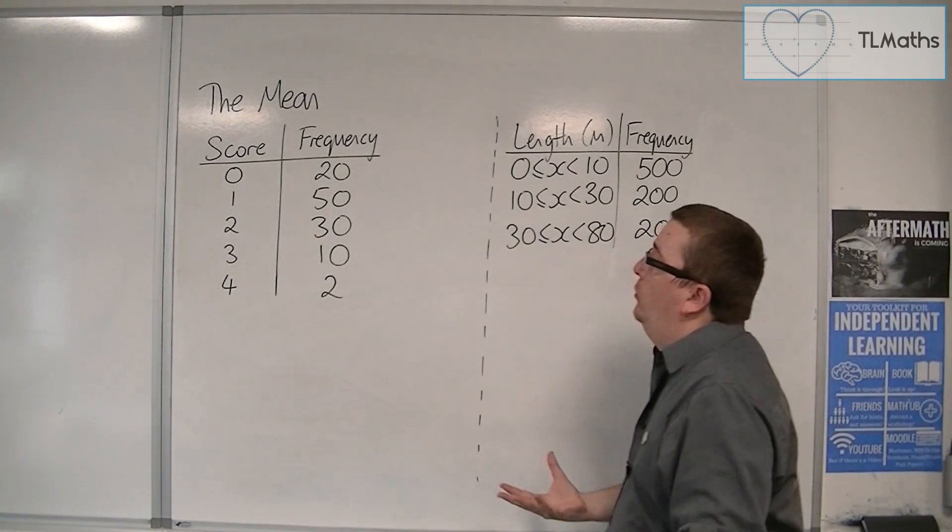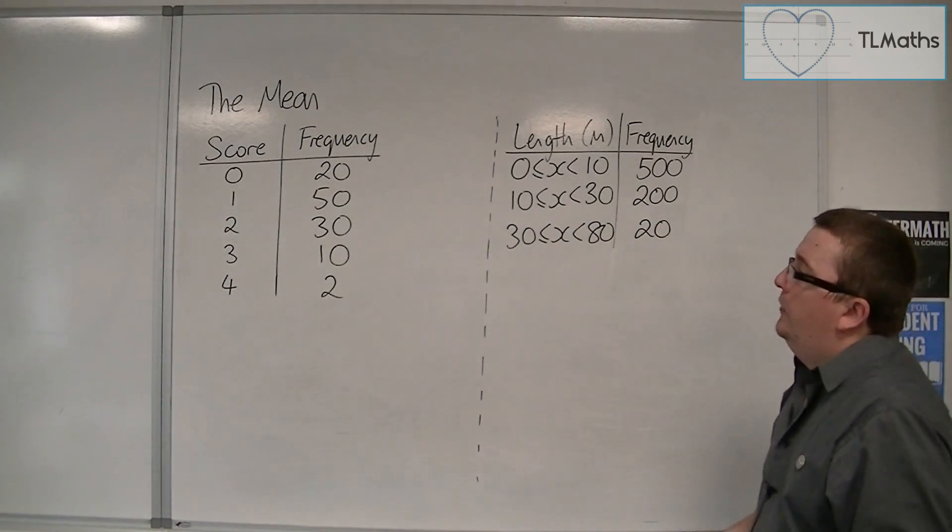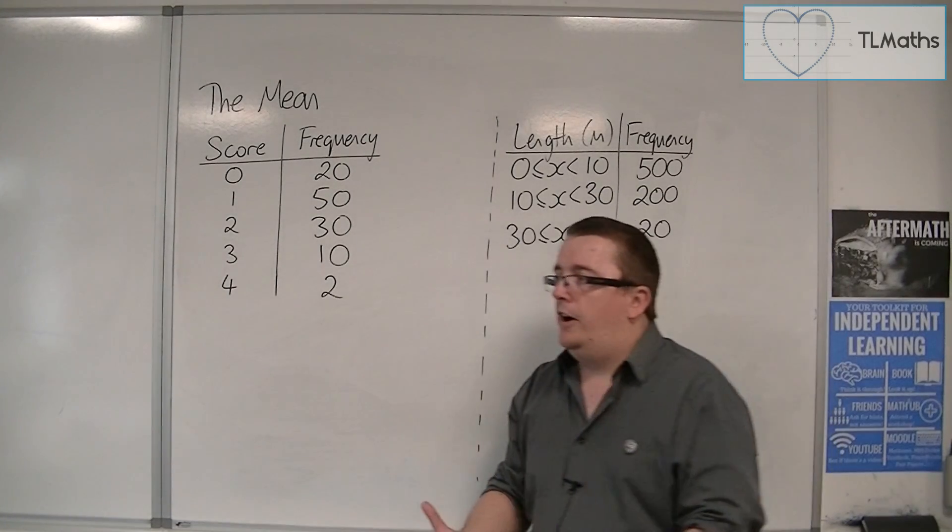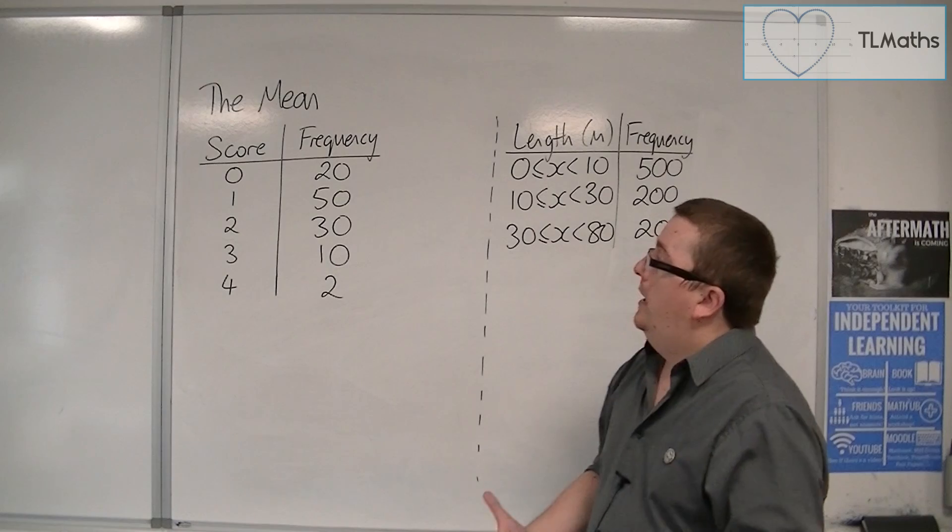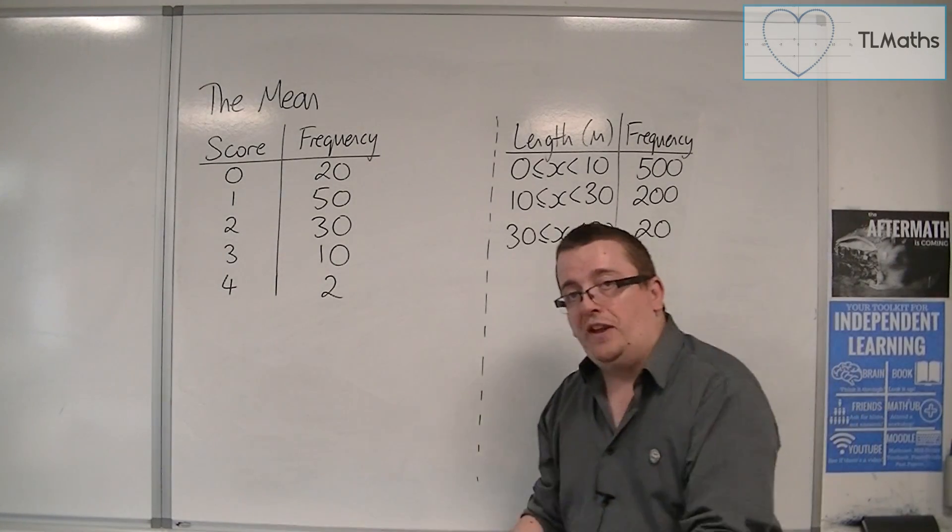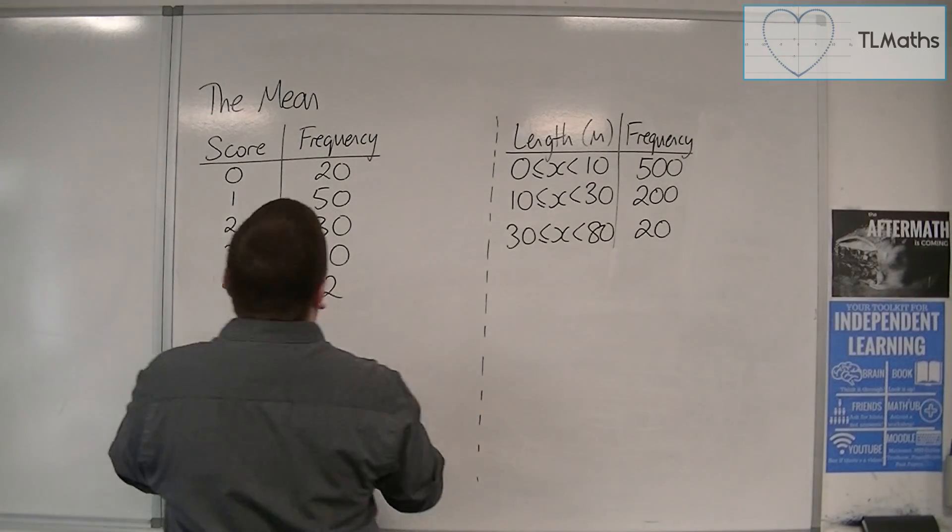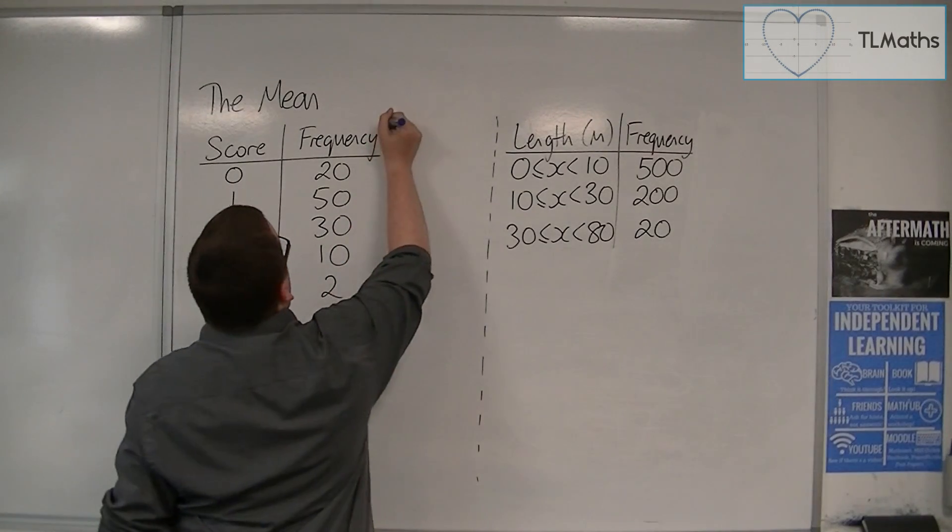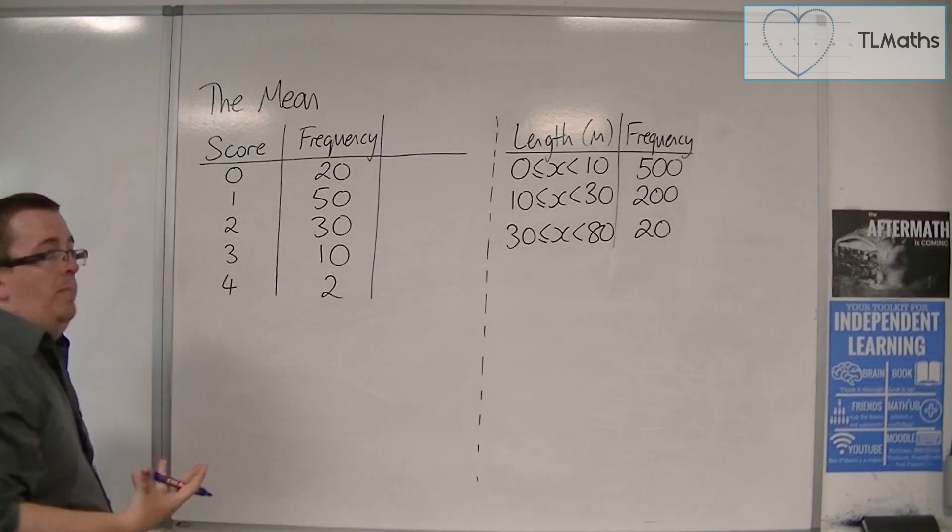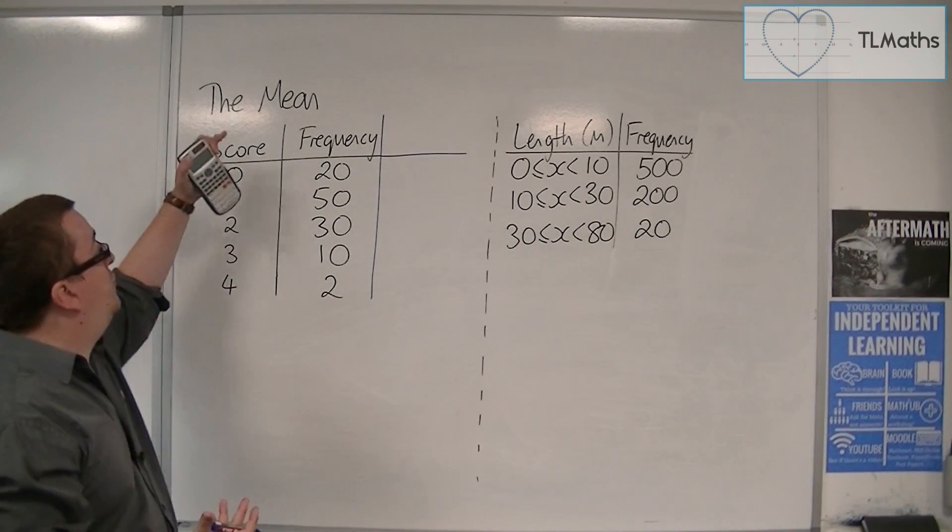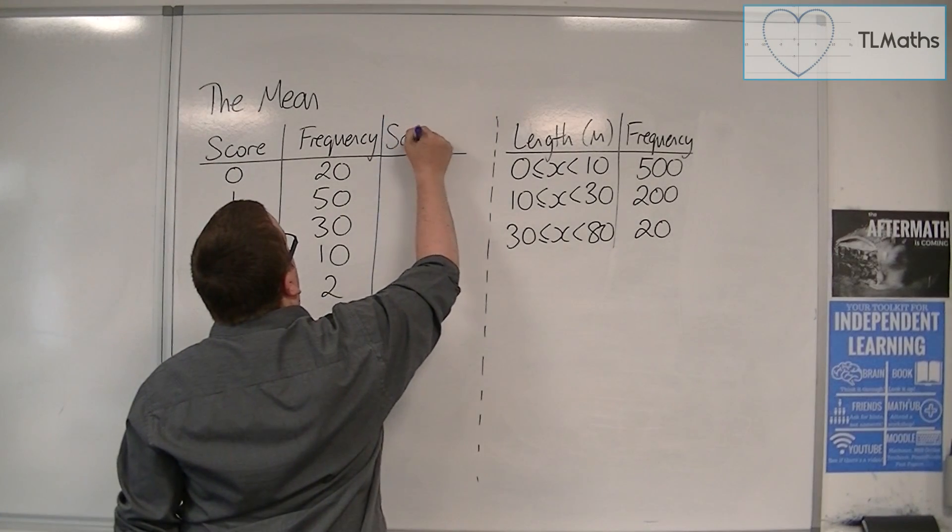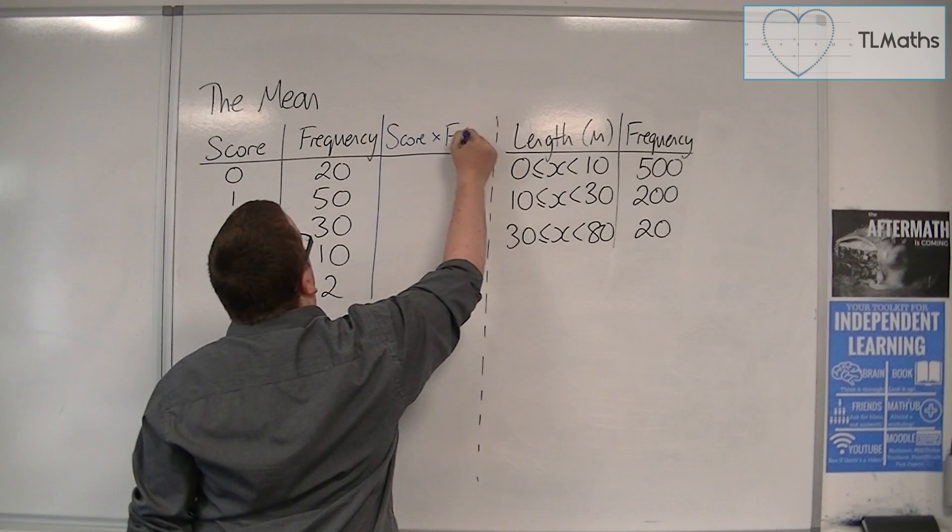We've got all the data in a table, so it makes sense that in order to add them all up, I'd work out what would all the zeros add up to, what would all the ones add up to, what would all the twos add up to. And so what we do is we create another column where we multiply, in this case, the score by the frequency. So score times frequency.